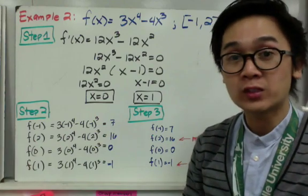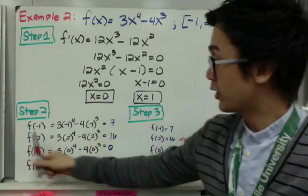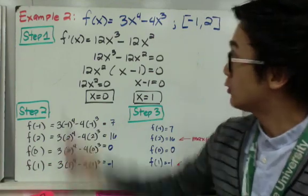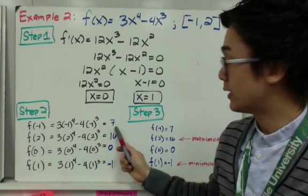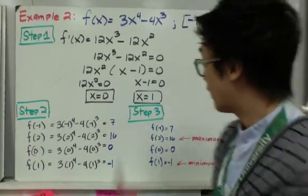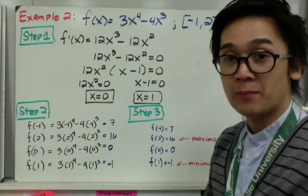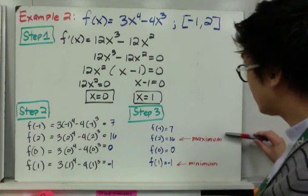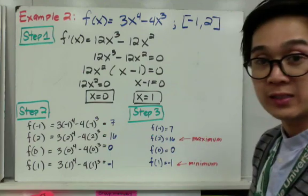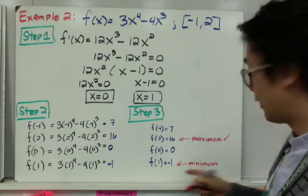For the second step, we find each y value from the given interval endpoints and critical numbers: f of negative 1, f of 2, f of 0, and f of 1. Evaluating using f of x: f of negative 1 is 7, f of 2 is 16, f of 0 is 0, and f of 1 is negative 1. For the third step, comparing all y values, f of 2 which is 16 is our maximum, and f of 1 which is negative 1 is our minimum.